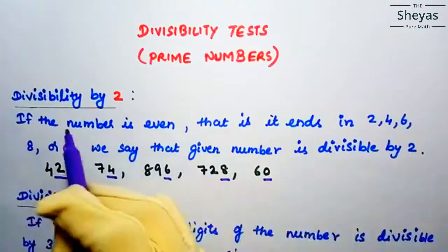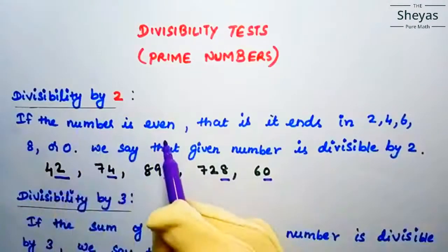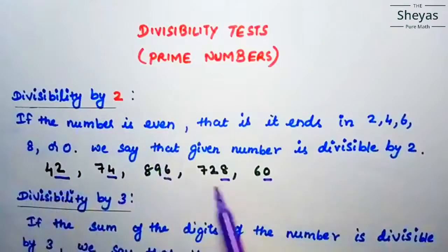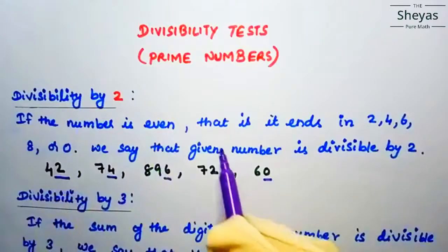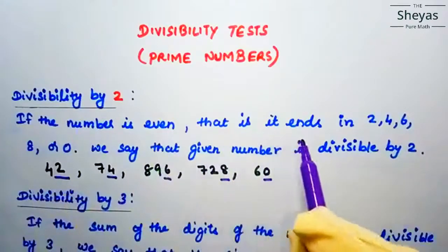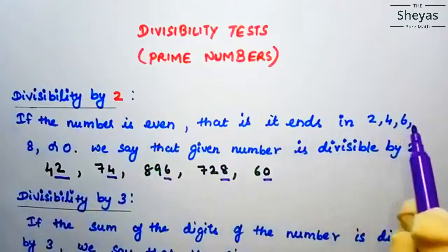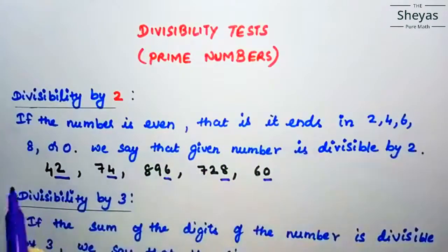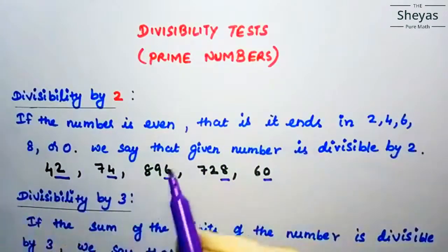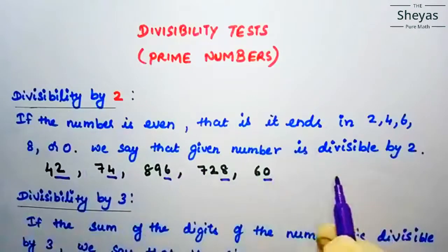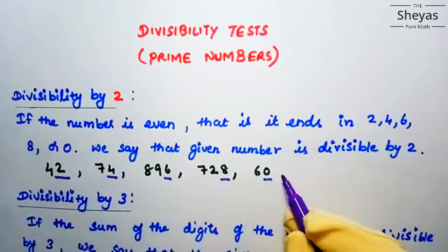Once again I repeat: if the number is even — that is, it ends in 2, 4, 6, 8, or 0 — we say that the given number is divisible by 2.